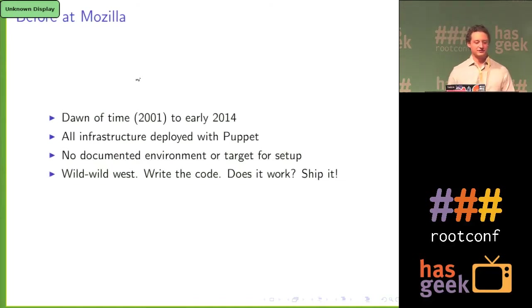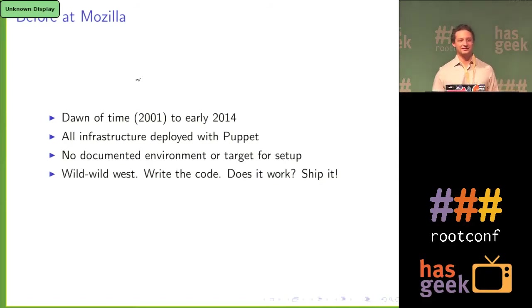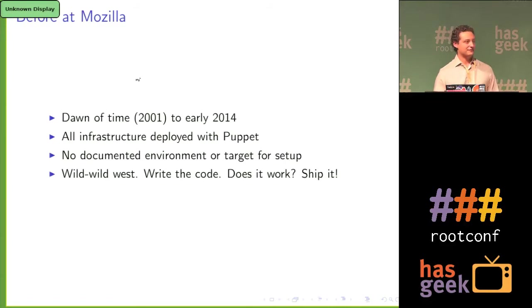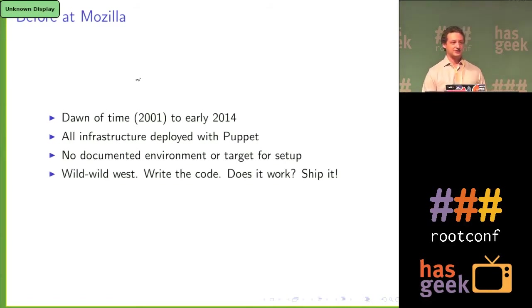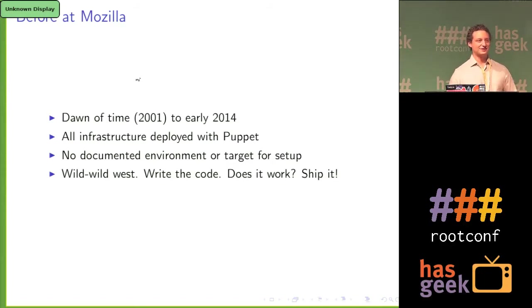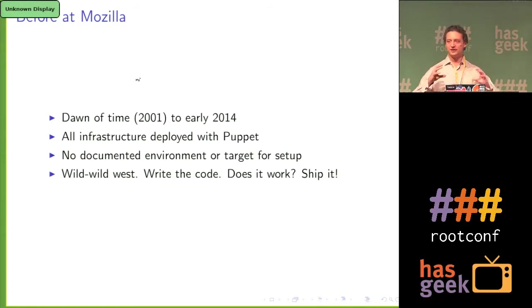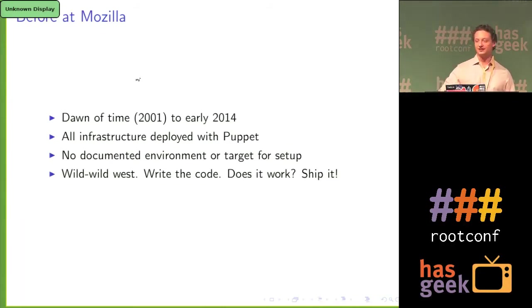The way that the infrastructure at Mozilla has been done since the dawn of time — and for that it means 2001 to 2014 — is that everything has been deployed with some kind of configuration management. Most recently, it's been Puppet. That's what we're using now, and we're very happy with it. But the problem was we didn't really have a documented environment for what everything should look like, and we didn't really have a target.